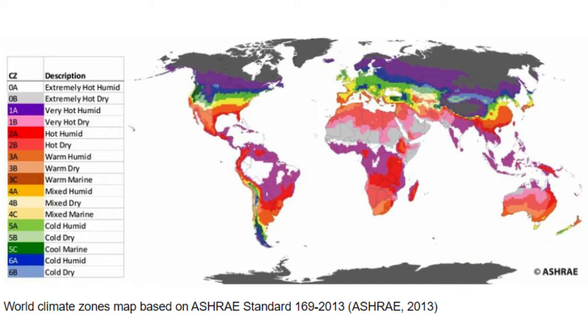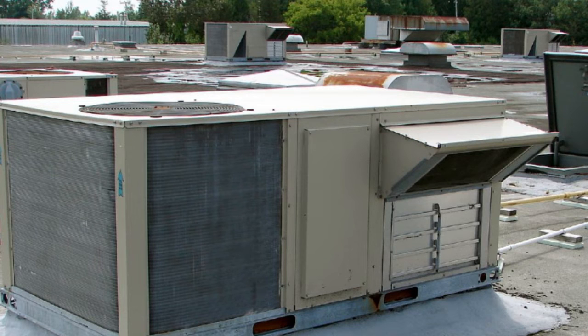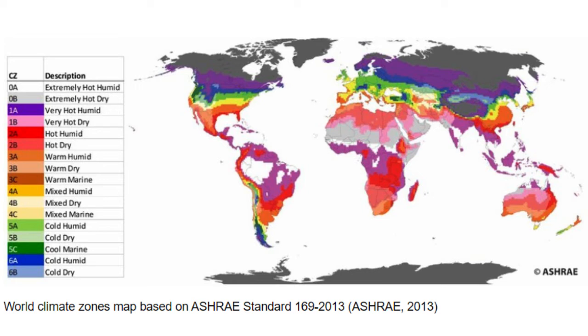First in the lineup is ASHRAE Standard 169. This standard acts like a tailored map for HVAC designers, helping them choose the right equipment and systems based on the unique climate conditions of a location. It's essentially the compass for climate-conscious HVAC design.